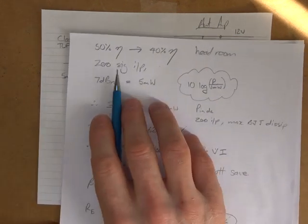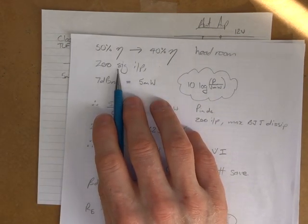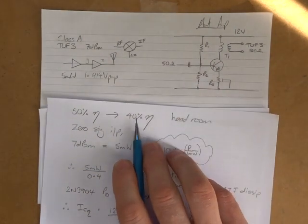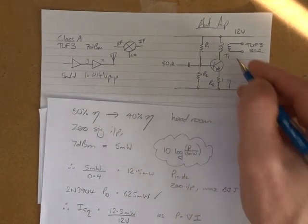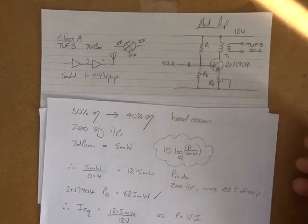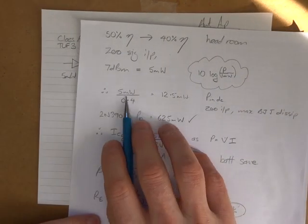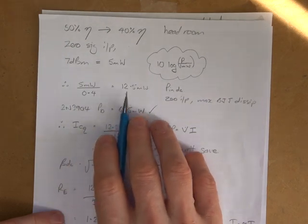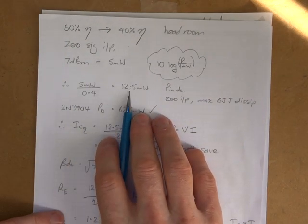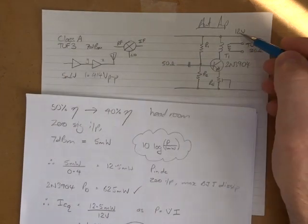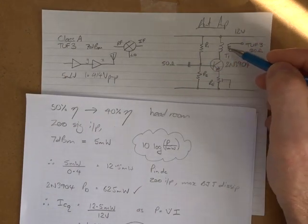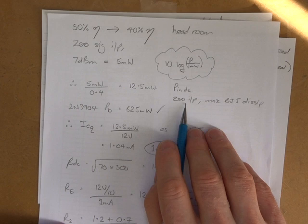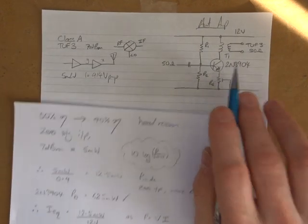So if that's the case then, for no signal going in, I need to make sure that with a 40% efficiency, that my transistor there, the 2N3904, can dissipate that power. So if I was to take 5 milliwatts divided by 0.4, so that 40% efficiency, I come out with 12.5 milliwatts. So that's the overall power that my power supply here, or the battery in this particular case, needs to be able to deliver to this circuit as a whole. And for zero input, all of that power needs to be dissipated across the transistor.